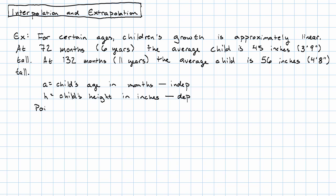The equation we'll get, well, we'll find the slope, and the points that we're given are age is 72 months, height is 45 inches, and age is 132 months, height is 56 inches.